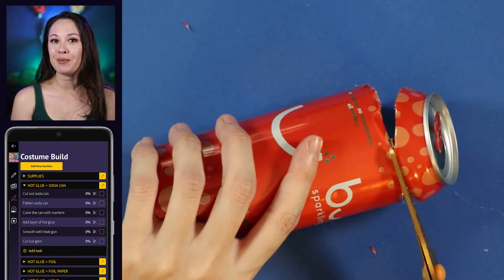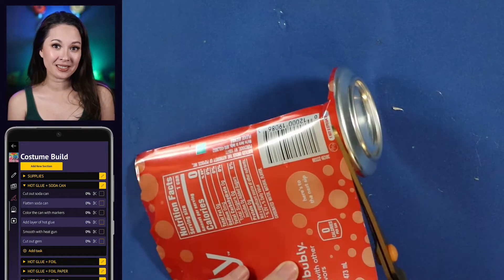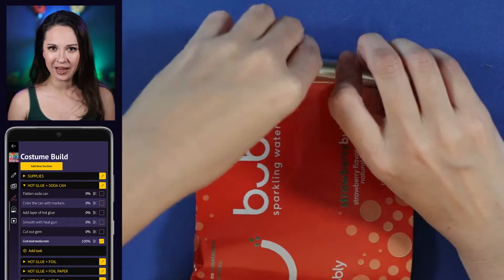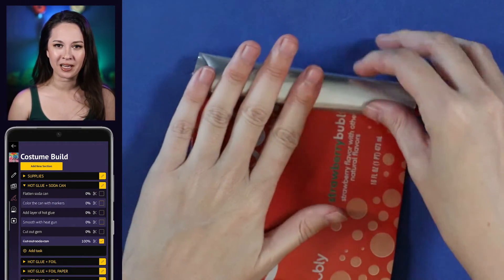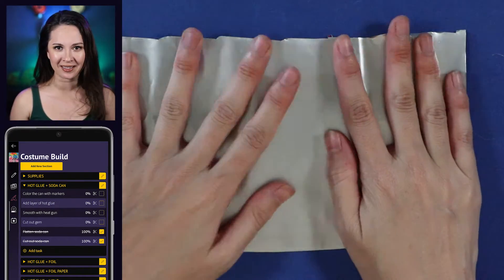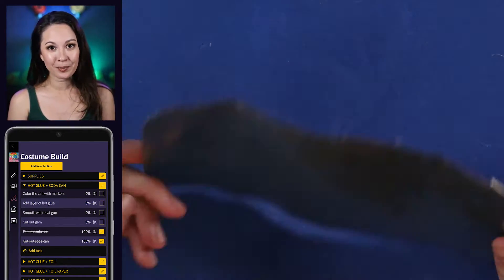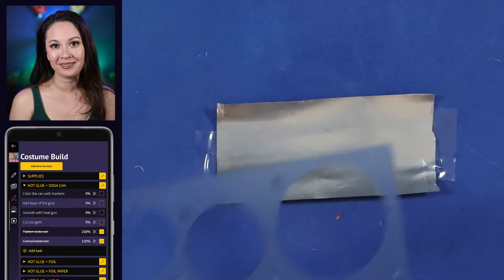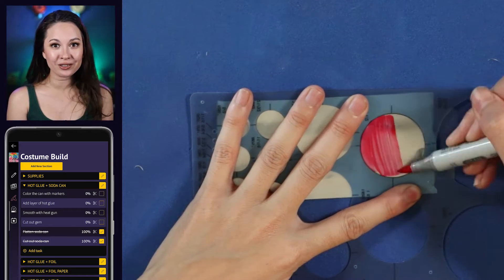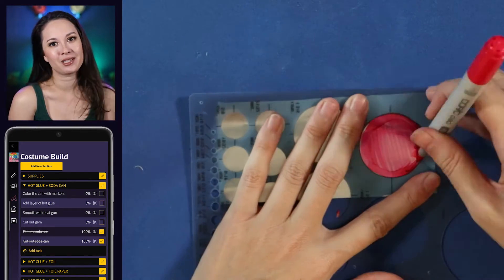Soda cans are a cheap, easy, sturdy method for backing gems. Most are plain silver on the inside so all you have to do is cut it out and flatten it. The edges were going to be sharp but I think it's actually only sharp where it's thicker on the top and bottom. Cut out a piece of the aluminum and tape it to whatever surface you're working on. Pick a marker to color your base. The easiest shape to do with hot glue is circles.